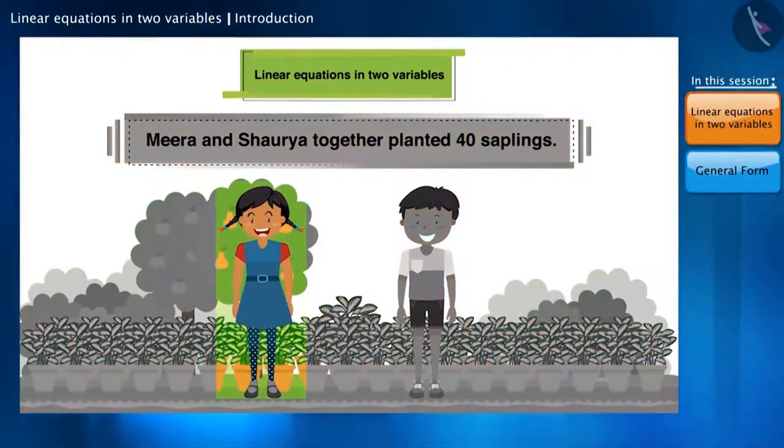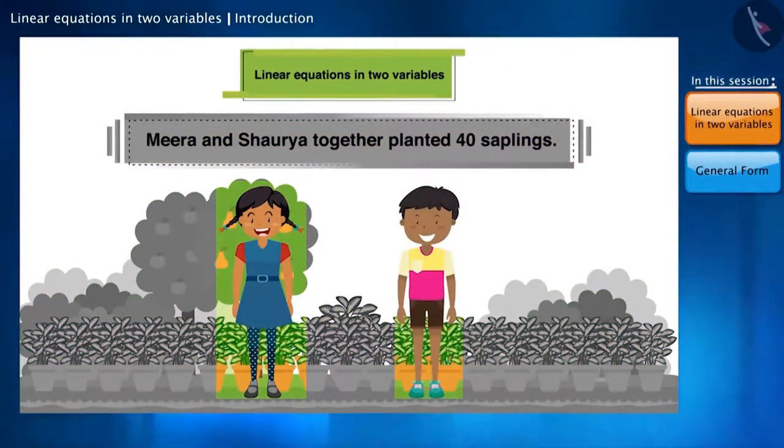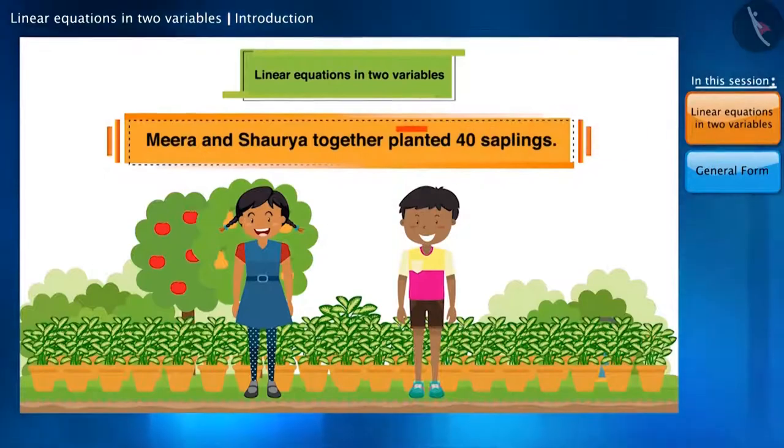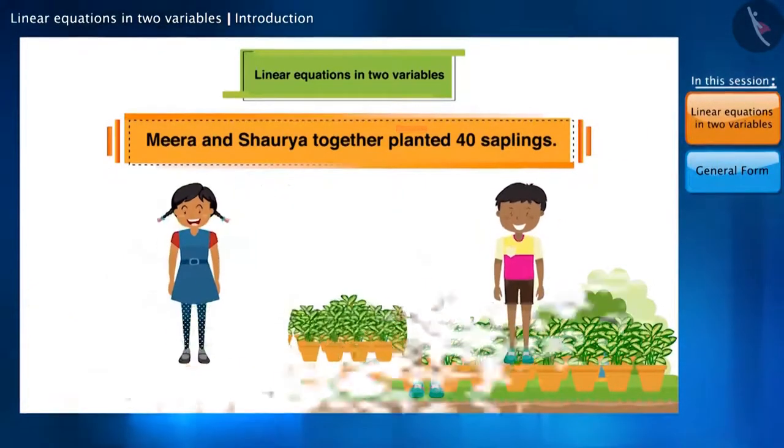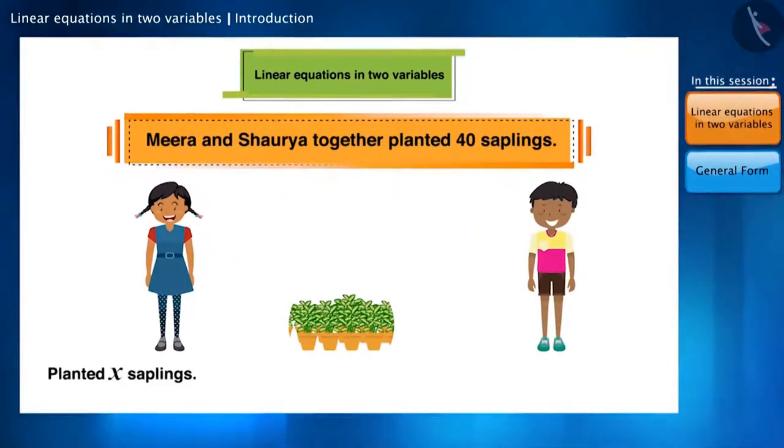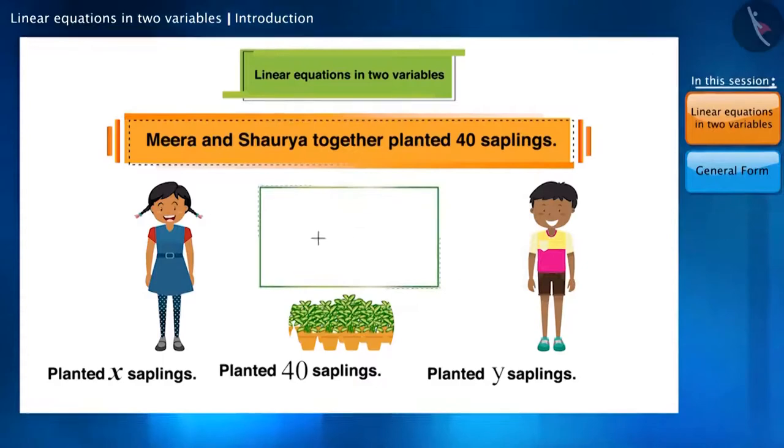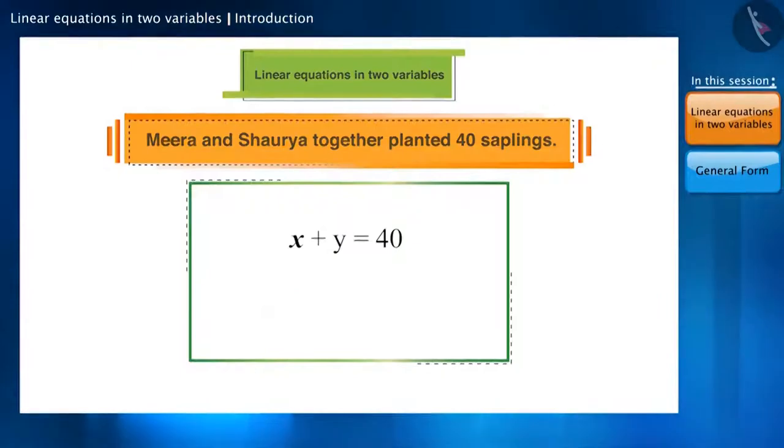We don't know how many plants Meera and Shouria planted individually. But together they planted 40 saplings. Suppose Meera planted x saplings and Shouria planted y saplings. Together, they planted 40 saplings. So we get x plus y is equal to 40. This becomes an equation.